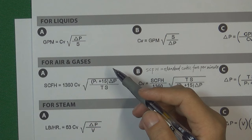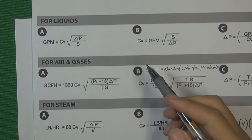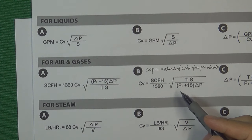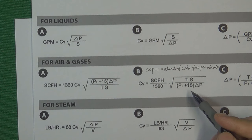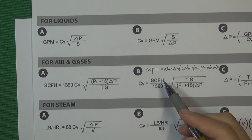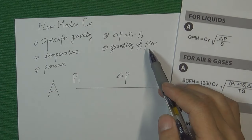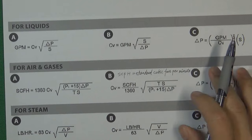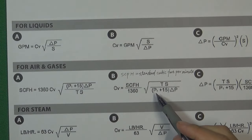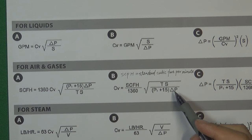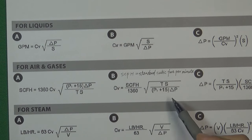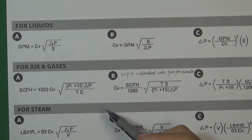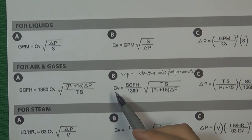We put all those five design factors into a formula to calculate the flow medium CV. Because different flow media have different properties, we basically have three kinds of formula. For example, the gas formula looks like this. The SCFH is for the quantity of flow — the unit is standard cubic feet per hour. T is for temperature, S is for specific gravity, P1 is for pressure, and Delta P is for the difference in pressure. Putting these five design factors into the formula gives us the accurate flow medium CV, which we then use to choose a correct size of control valve.